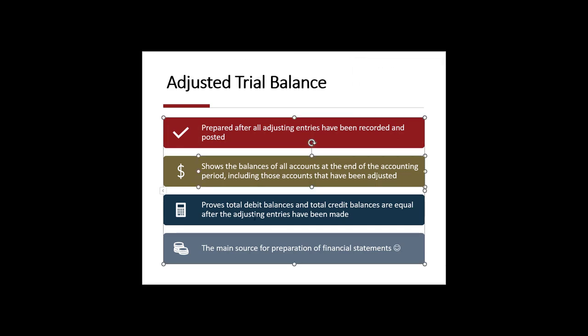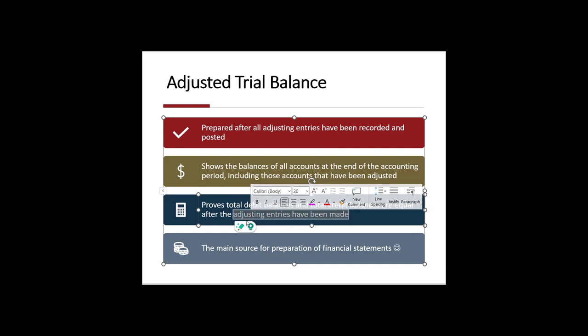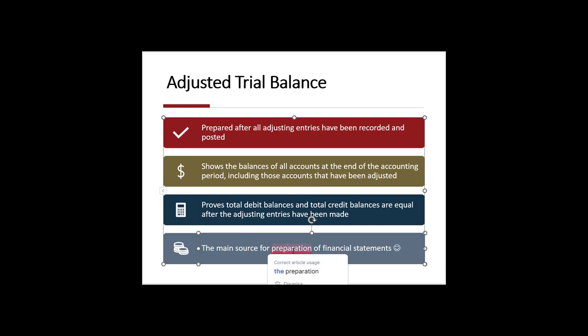Just like the regular trial balance, the adjusted trial balance shows that all the debits and credits have been made and are equal, and we can expect all the adjusting entries have been made. From that adjusted trial balance, you then prepare your financial statements.